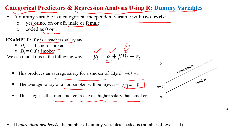From this graph, we can see that the non-smoker teacher has a higher salary on average. If we have a categorical variable with more than two levels, the number of dummy variables needed is the number of levels minus one. We will first discuss how to handle a two-level categorical independent variable in R and how to interpret those results.